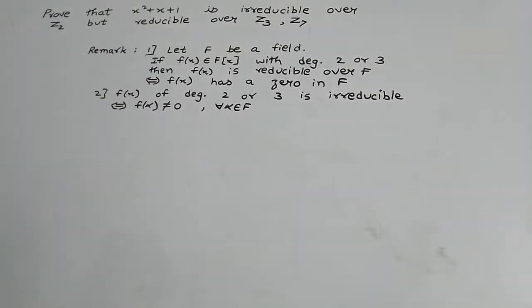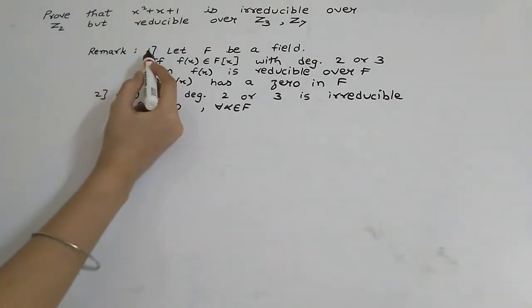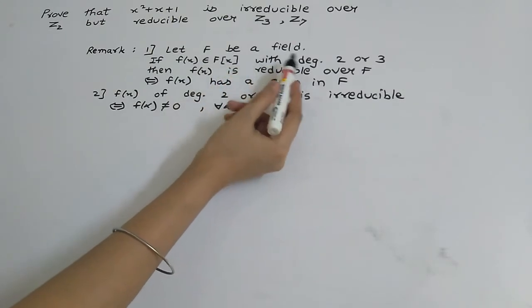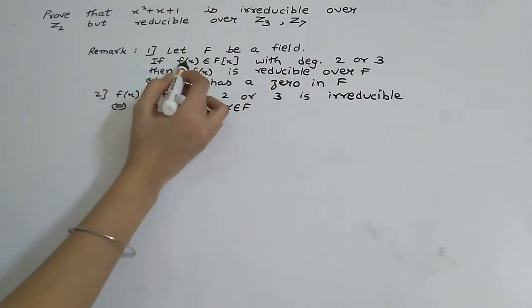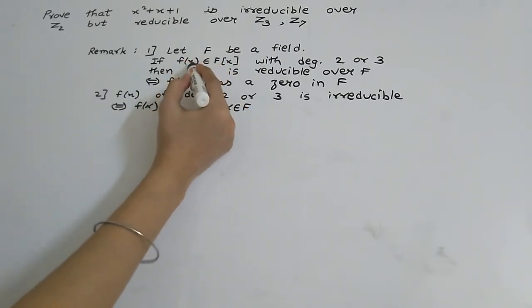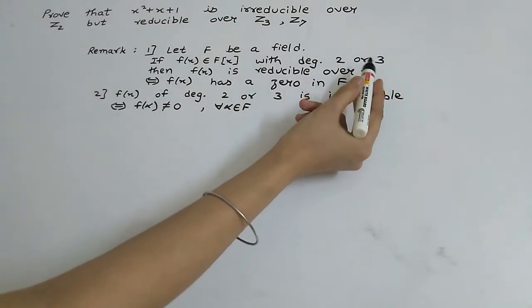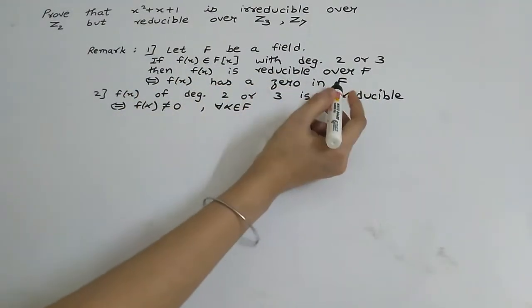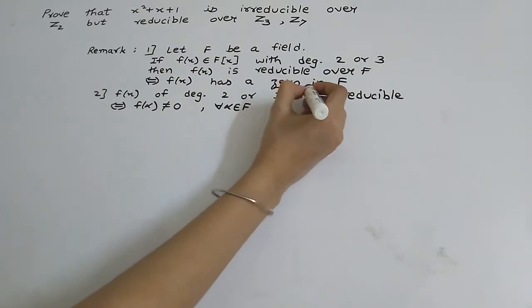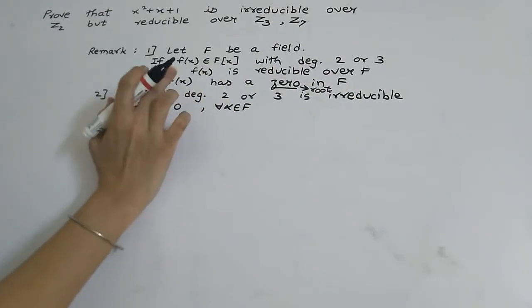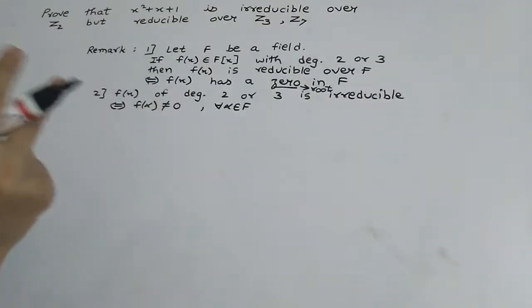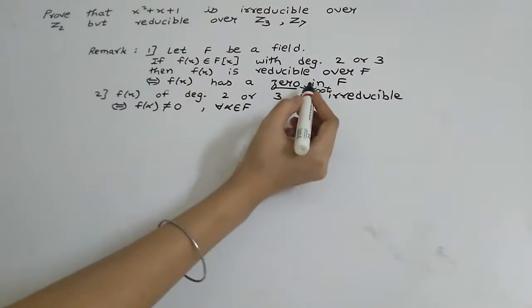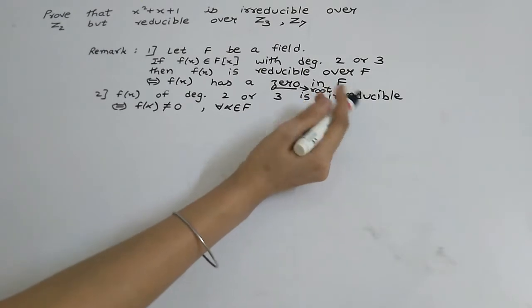Before seeing this example, we need to look at a remark which will help us. The first remark is: let F be a field. If f(x) belongs to the polynomial ring F[x] with degree 2 or 3, then f(x) is reducible over F if and only if f(x) has a zero in F — meaning a root that belongs to F.